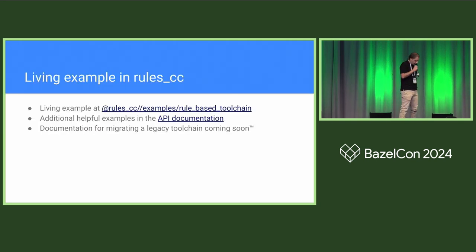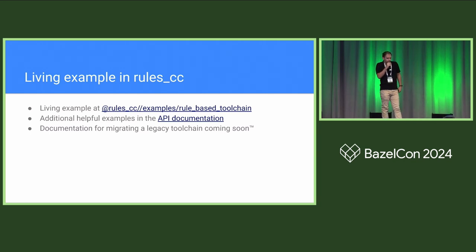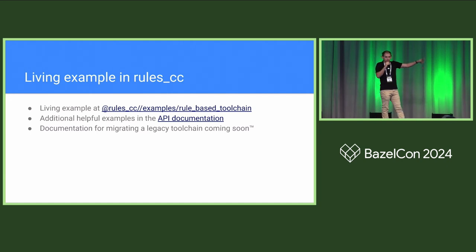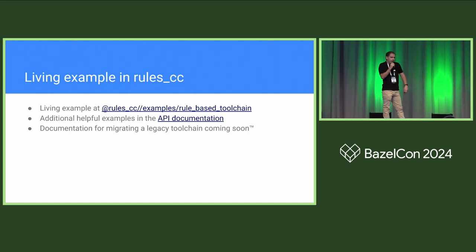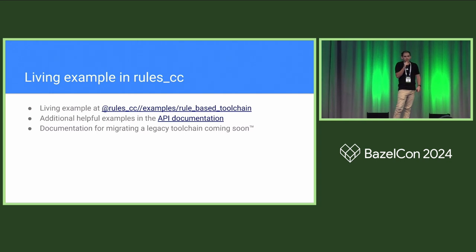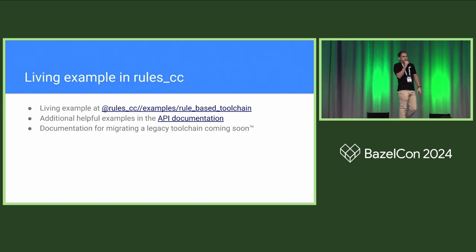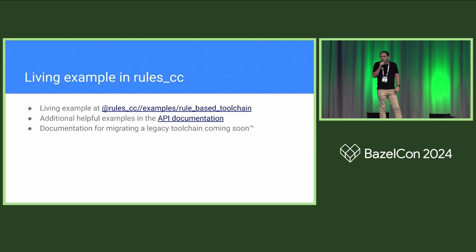One last thing I want to highlight: Rule CC has a full API for this, and importantly, it has a rule-based toolchain that is a living example that is part of the CI for Rule CC. So you know that is always going to be a good example to pull from if you're curious how to deploy this in your own project. We're also interested in adding even more documentation — we want to make sure this is approachable for as many people as possible, because owning a toolchain configuration is valuable only if you know how to maintain it. Good documentation is very important to us, including a migration guide and a few other things.